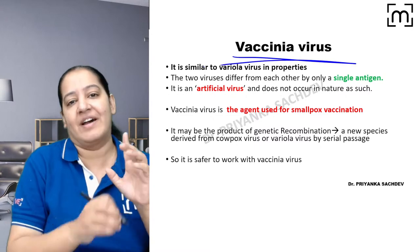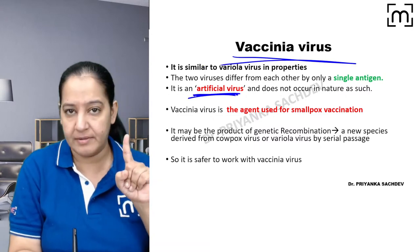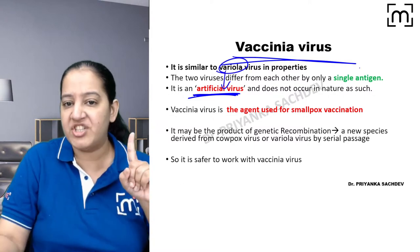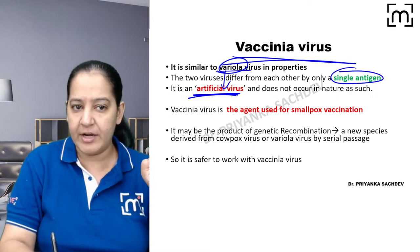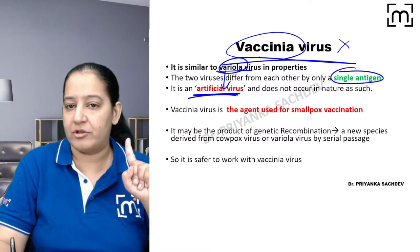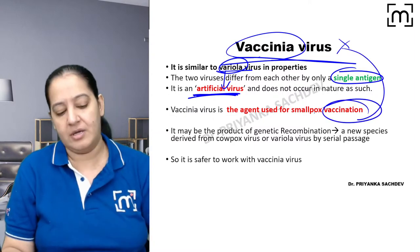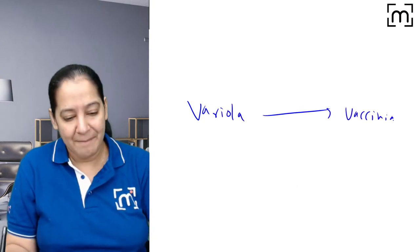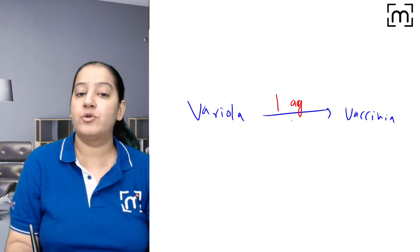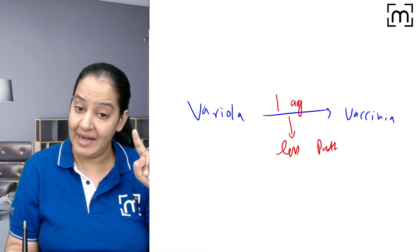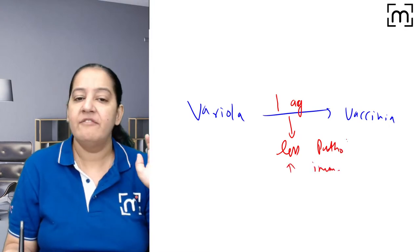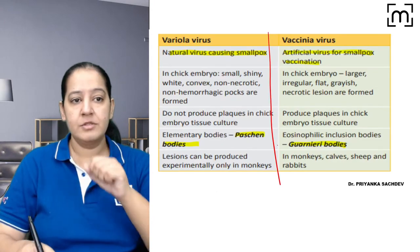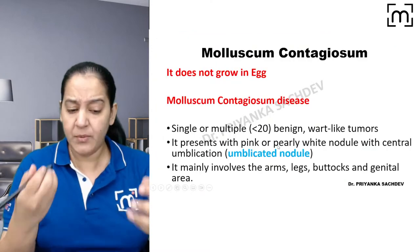The next virus is Vaccinia. It is not a naturally occurring virus — it is artificial. Humans produced it from Variola by changing one antigen, converting Variola into Vaccinia. This makes it non-pathogenic but more immunogenic — less pathogenic, more immunogenic — so it can be used for vaccination against smallpox.